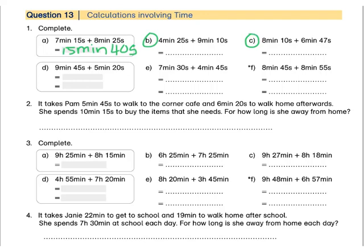Let's now look at D. Again, we're going to add our minutes first. 9 minutes plus 5 minutes gives us 14 minutes. Then if we add our seconds, 45 seconds plus 20 seconds, we get 65 seconds.